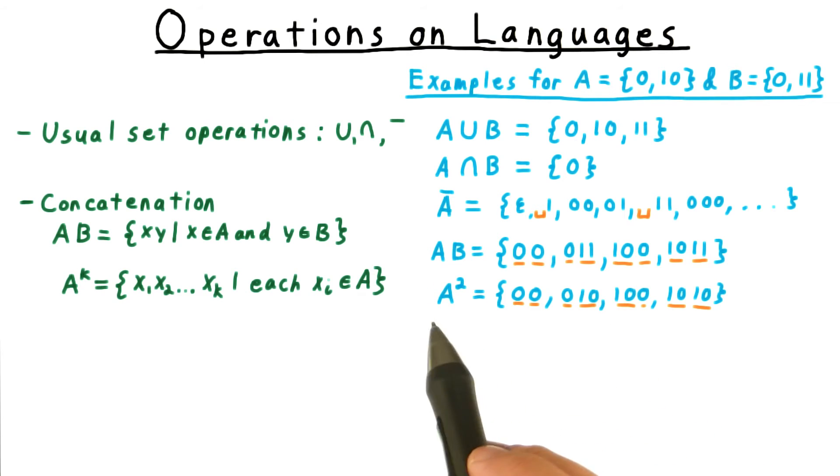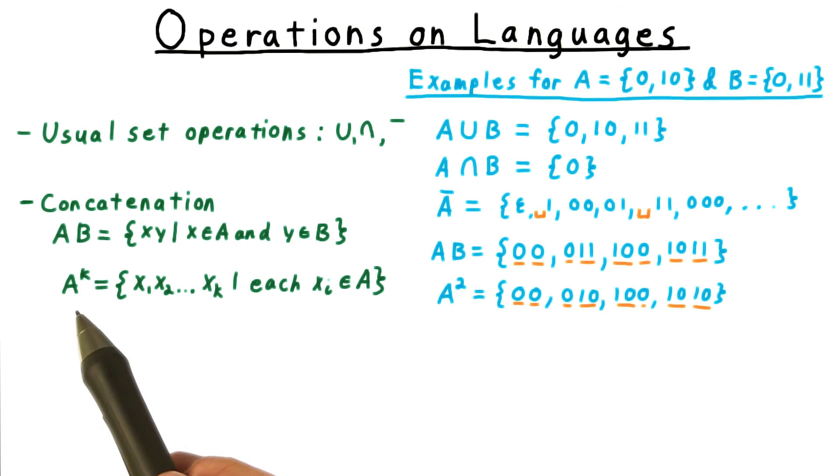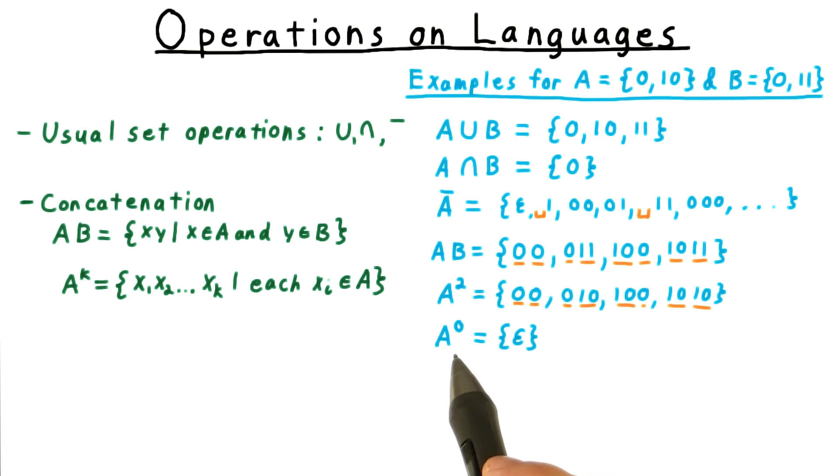Instead of writing AA, we often write A squared. And in general, when we want to concatenate a language with itself k times, we write A to the kth power. Note that for k equals 0, this is defined as the language containing exactly the empty string.